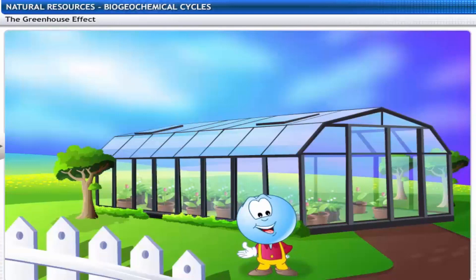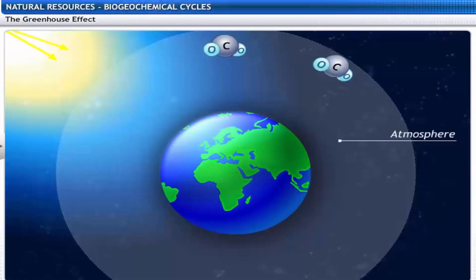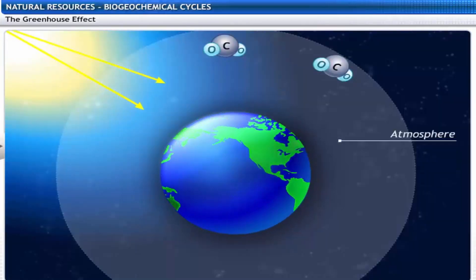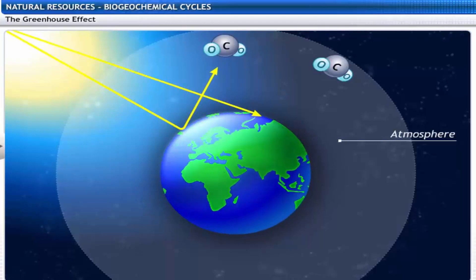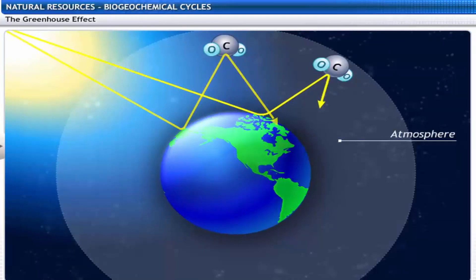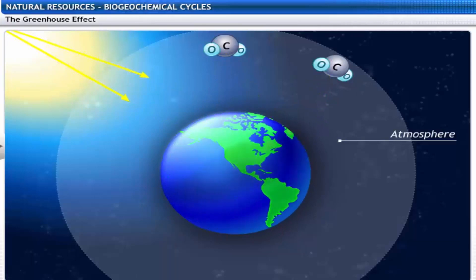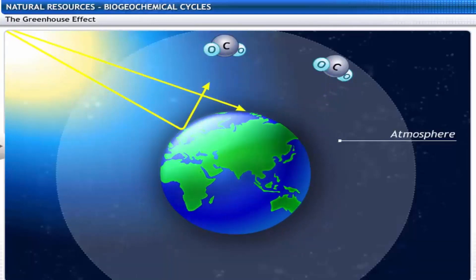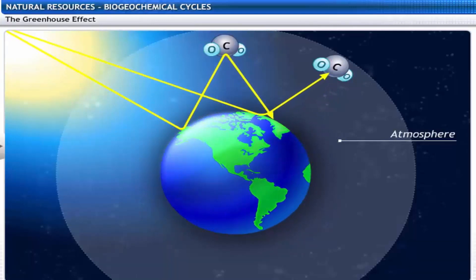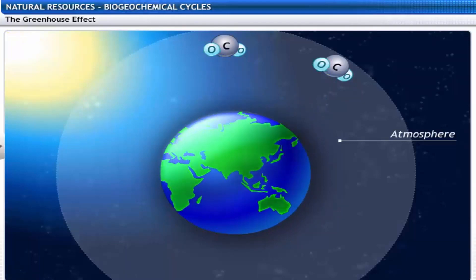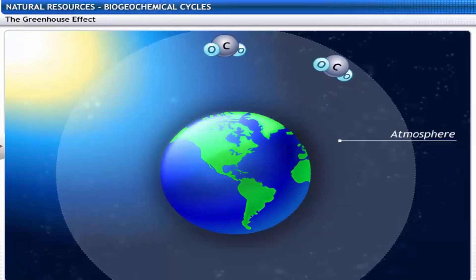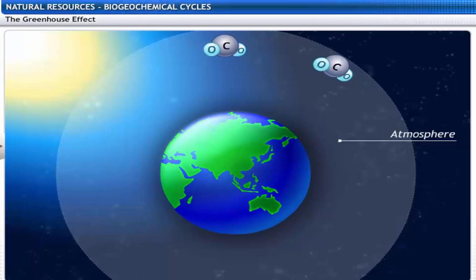You must be wondering what greenhouses have to do with the biosphere. Take a look. Solar radiation reaching the earth is reflected back into the atmosphere. Although much of this radiant heat is lost to space, atmospheric gases like carbon dioxide trap the heat. This is called the greenhouse effect. It keeps the earth warm to sustain life.